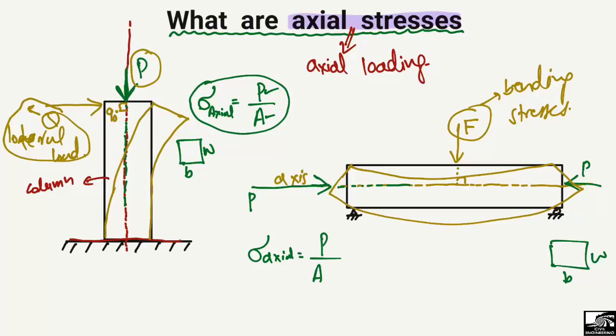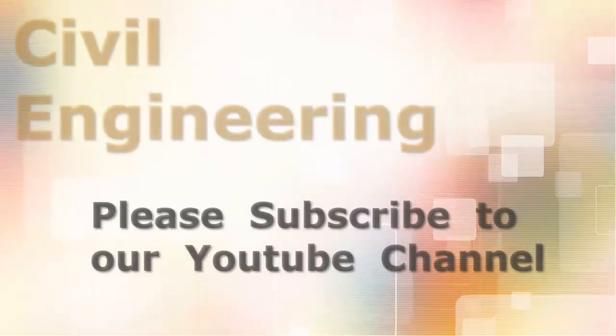So you should keep in mind that the direction of load is very important. If the load is perpendicular to the axis, it creates different stresses such as bending stresses. But if the load acts along the axis of the beam or column, it will always produce axial stresses. Hope you guys understand — please subscribe to our channel for more civil engineering videos. Thank you for watching.